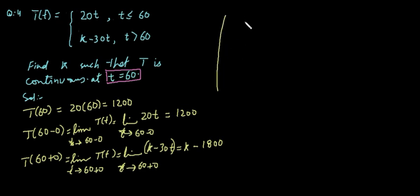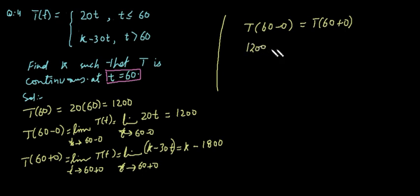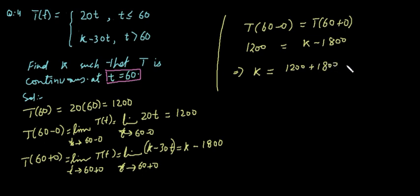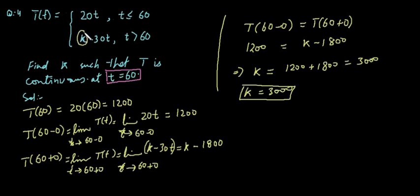Since the function is given to be continuous, the left-hand limit must equal the right-hand limit. The left-hand limit is 1200 and the right-hand limit is k minus 1800. Setting them equal: 1200 equals k minus 1800, so k equals 1200 plus 1800, which gives k equals 3000. This is the value of k, and when substituted into the function, the function will be continuous.